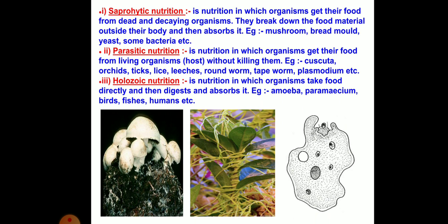Saprotrophic nutrition is the nutrition in which organisms get their food from dead and decaying organisms. They break down the food material outside their body and then absorb it. Examples include mushrooms, bread molds, yeast and some bacteria.